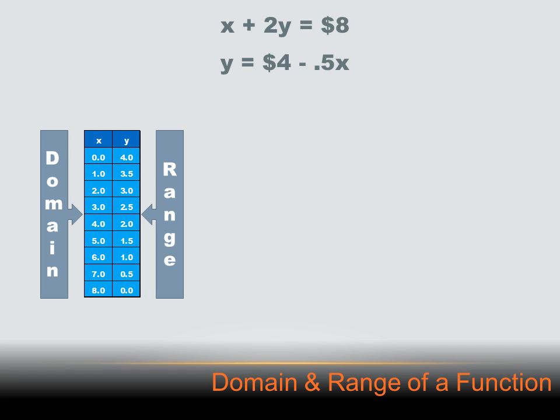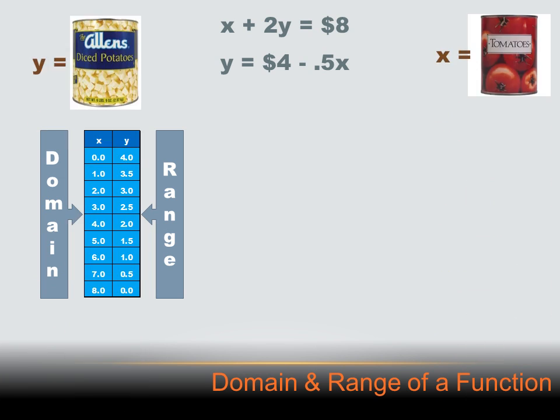Okay, we've got the same function here and the same domain and the same range, but let's make it a little less abstract. Let's give x and y some tangible values. Let's say that x is a can of tomatoes and y is a can of potatoes. And what this equation is saying, if we look at the first part of the equation, is the number of cans of tomatoes you buy plus two times the number of cans of potatoes you buy equals $8. And what that really means is you've got $8 to spend, and cans of potatoes are $2 each, and cans of tomatoes are $1 each.